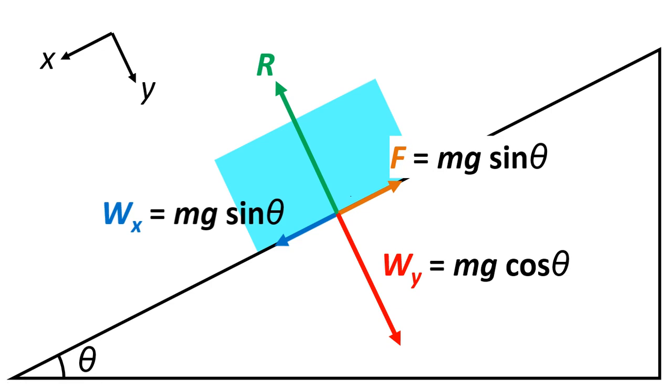Because the object is stationary, the friction, the magnitude of this will be the same as wx. So friction F will also equal mg sin theta.